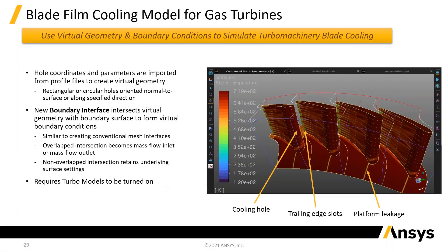Blade film cooling — it's important when cooling blades to have holes for the cooling gas. CFX has long had models for dealing with this specifically, and we've now brought those into Fluent. You don't have to set a whole pile of inlets; you can read in tables of holes. It does clever things to make sure it captures the jet going out, and it is now much more performant and at a very good state.